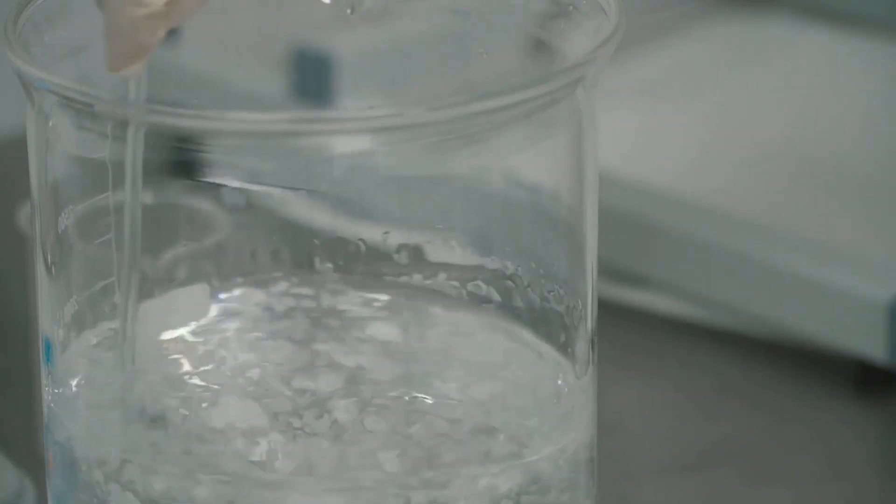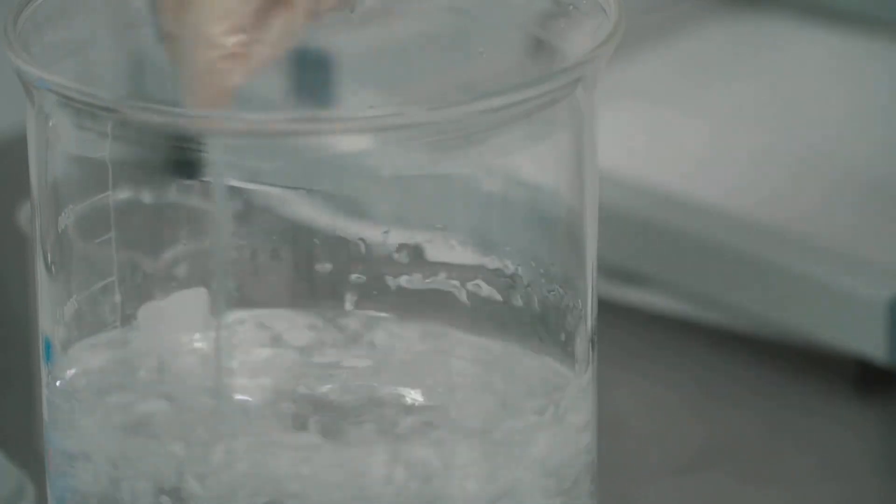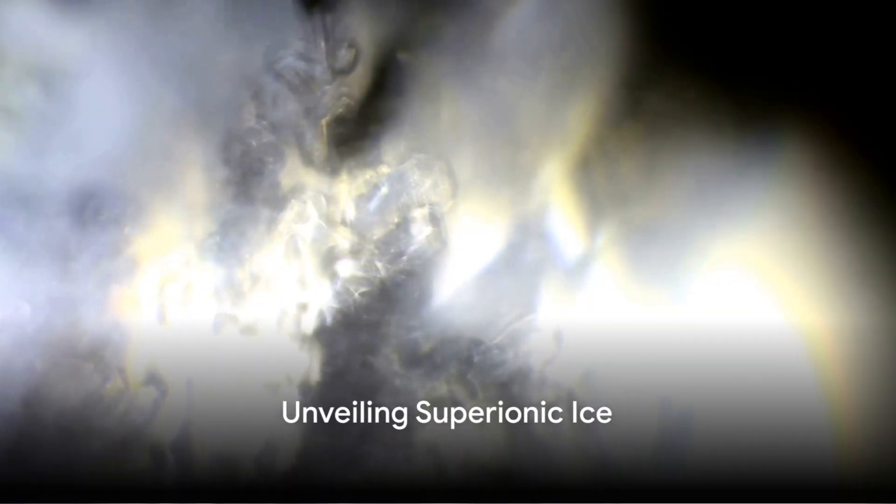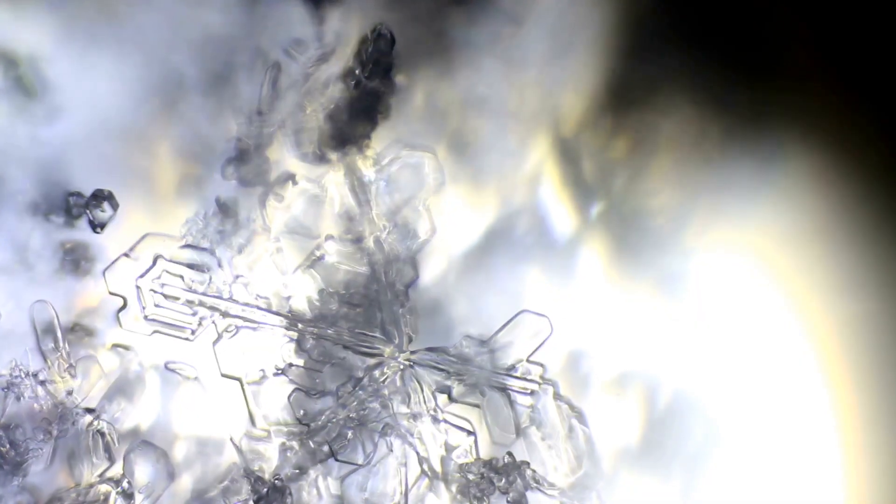Yes, welcome to the world of superionic ice, a mysterious phase of water that exists under extreme pressures and temperatures. Superionic ice is not your everyday ice, it's a form of water found in the interiors of celestial bodies like Uranus and Neptune.